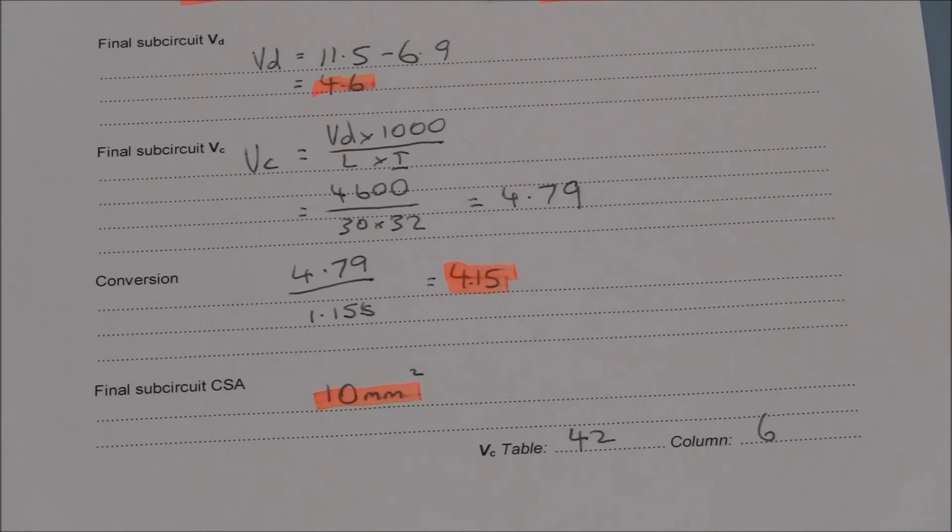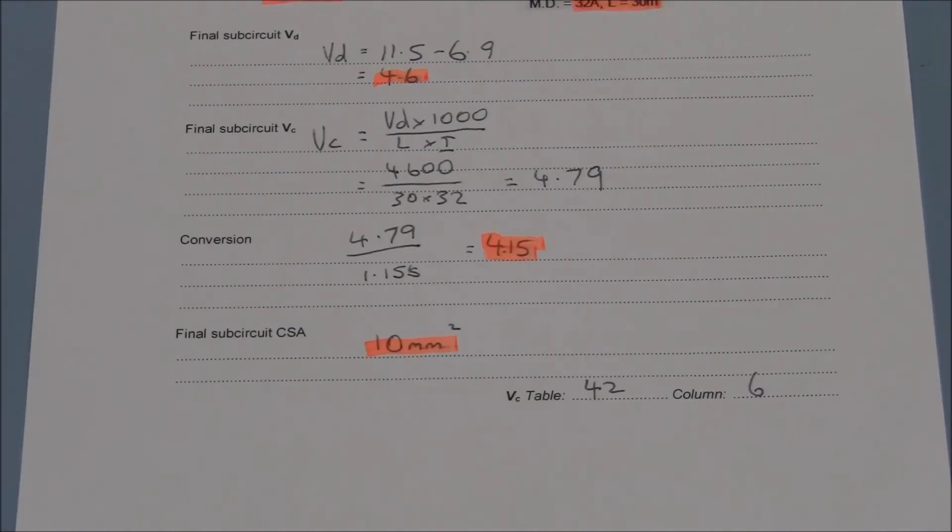Delivering 32 amps a distance of 30 metres is a substantial undertaking. This is why voltage drop considerations are complementary to current carrying capacity considerations. A more fluid method to determine the value of VC in a single phase arrangement is to incorporate the conversion in the actual equation like such.